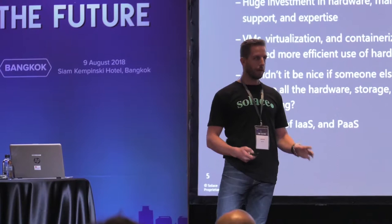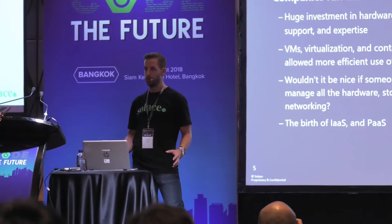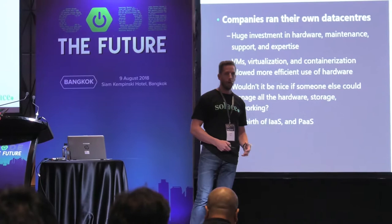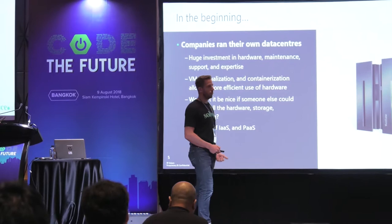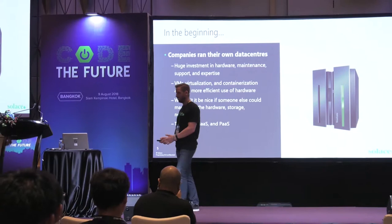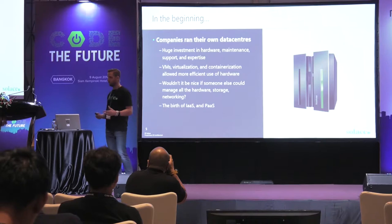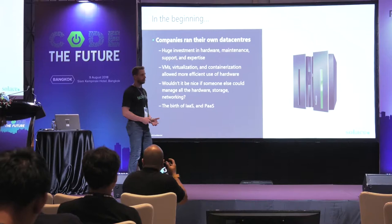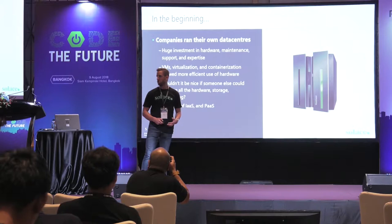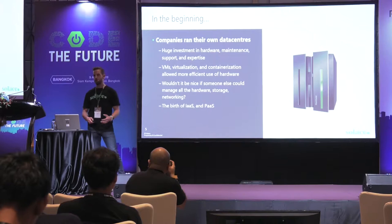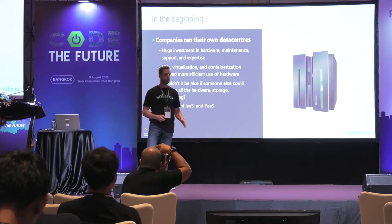In the beginning, companies used to run their own data centers — a lot still do. There's a lot of investment in computers and people to maintain them: licensing, power requirements, AC. As we moved forward, we could virtualize things — developer workstations disappeared, people ran VMs. But there was still a lot of hardware to maintain. Then along came Google, AWS, and you can now just rent their compute, storage, and networking. It's all taken care of for you.